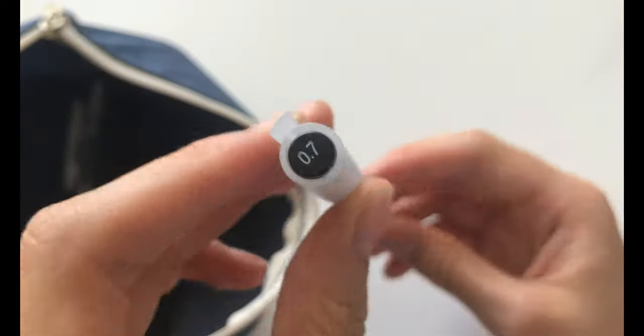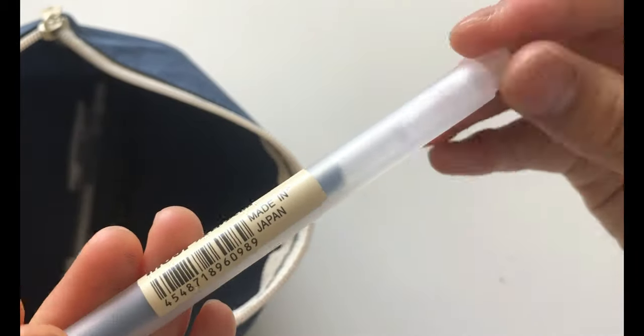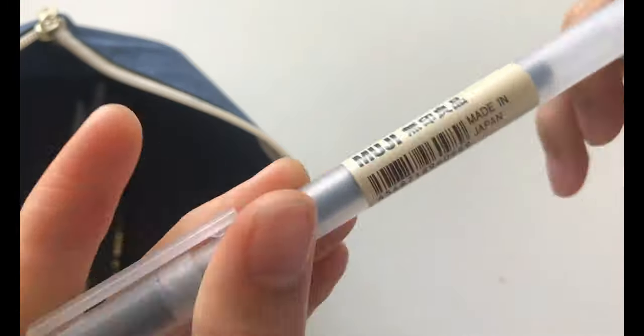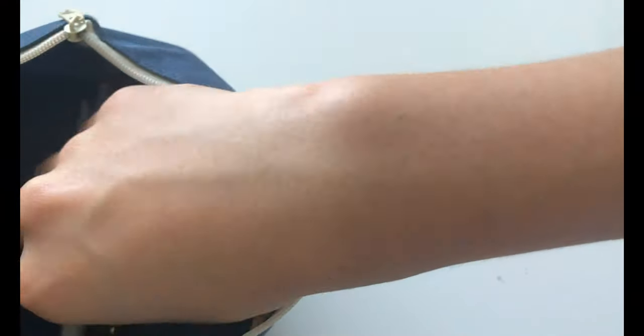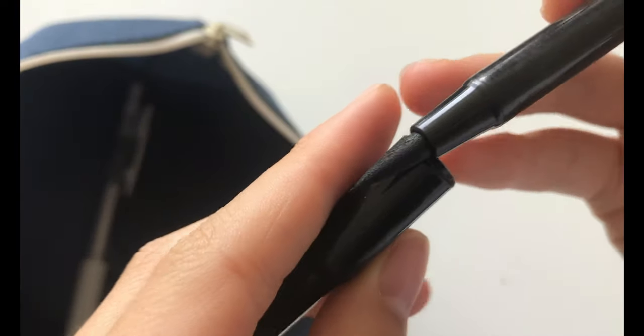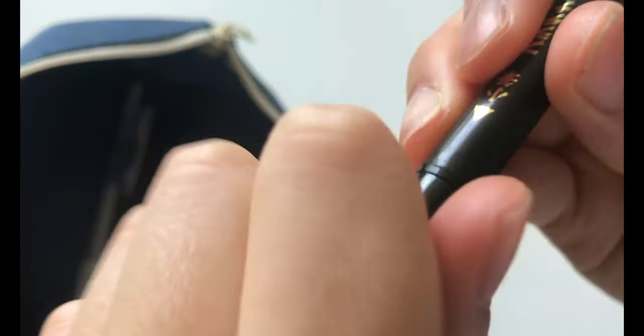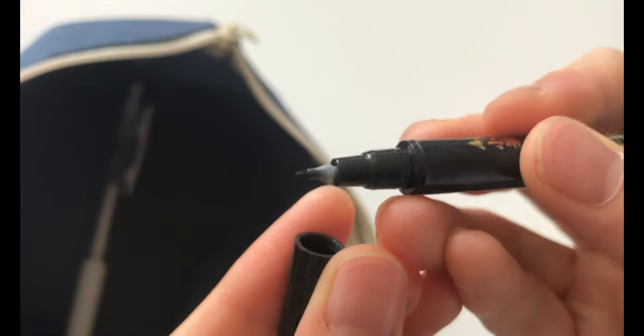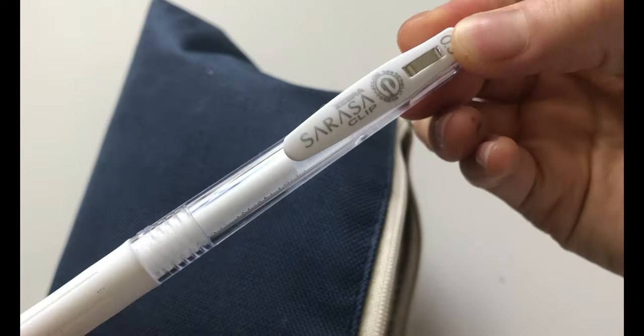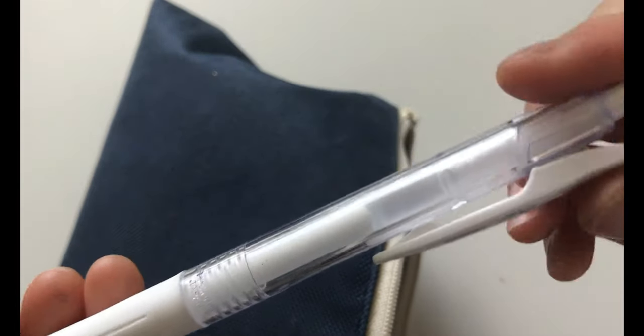Next I just have a 0.7 Muji gel ink pen. Next I have this double sided brush pen that I mostly use only for my bullet journals. So I really like this because these are a lot like the Tombow pens. Next I have a 0.5 Sarasal white gel ink pen.